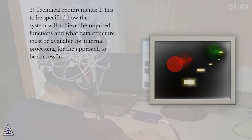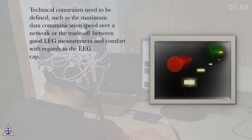3. Technical Requirements. It has to be specified how the system will achieve the required functions and what data structure must be available for internal processing for the approach to be successful. Technical constraints need to be defined, such as the maximum data communication speed over a network or the trade-off between good EEG measurement and comfort with regards to the EEG cap.